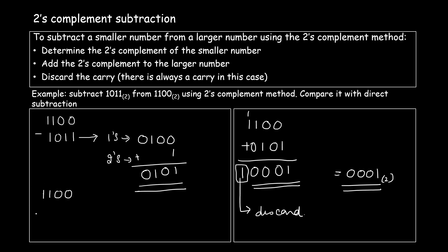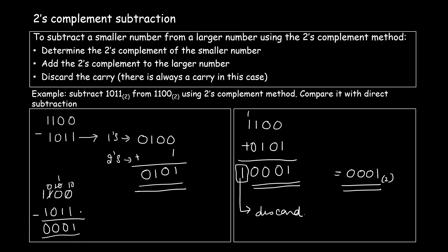Using the rules of binary subtraction: 0 minus 1 requires a borrow, but the immediate neighbor has nothing, so we borrow from further left — that position becomes 0, the next becomes 10, and after another borrow it becomes 1. Then 10 minus 1 is 1, 1 minus 1 is 0, 0 minus 0 is 0, and 1 minus 1 is 0. The direct subtraction gives 0001, the same answer as the 2's complement subtraction.